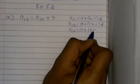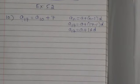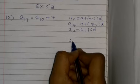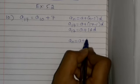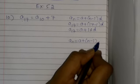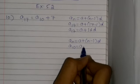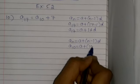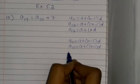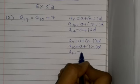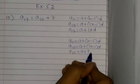Similarly, a10 = a + (10 - 1) × d. So a10 = a + 9d.